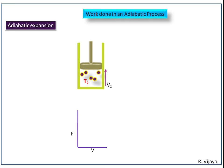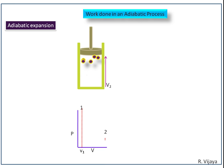This is the PV diagram. The nature of the gas molecules at the initial stage is marked as point 1, with volume V1. Now the gas molecules expand adiabatically, so the volume increases from V1 to V2 and the pressure decreases. The work is being done by the system adiabatically, and the work done can be calculated from this area. The temperature decreases from T2 to T1.